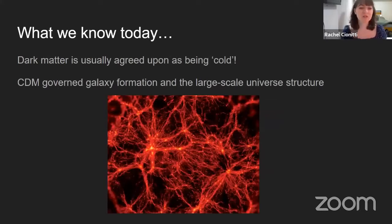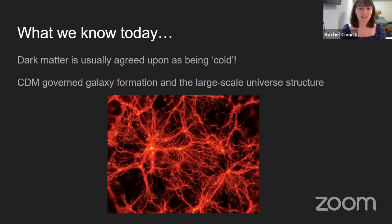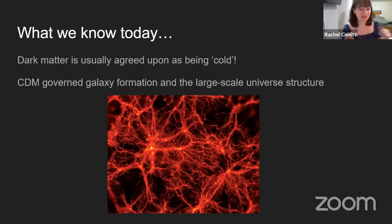We also know today that dark matter is usually agreed upon as being cold. In a nutshell, this means it's dense and more dense than our regular luminous matter, so it slows down quicker. In the early universe, matter and dark matter were both moving around really fast because the universe was small and hot — everything was moving around like boiling water. Dark matter being cold doesn't necessarily mean its temperature is colder, but it's moving at a lower velocity because it's heavier. Think of how a small sports car can move faster than a huge semi truck.